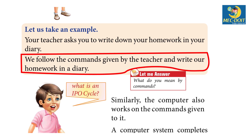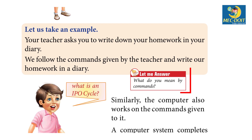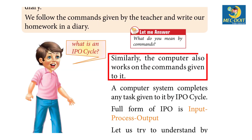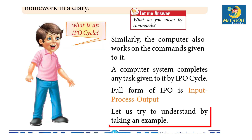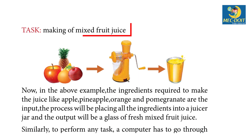Let us take an example: your teacher asks you to write down your homework in your diary. We follow the commands given by the teacher and write our homework in a diary. Similarly, the computer also works on the commands given to it. A computer system completes any task given to it by the IPO cycle. The full form of IPO is Input, Process, Output.